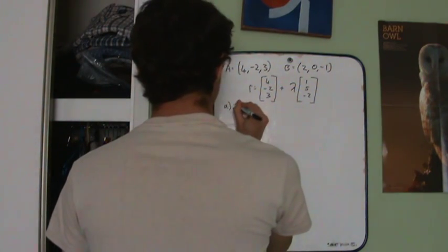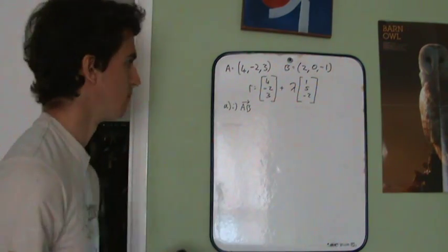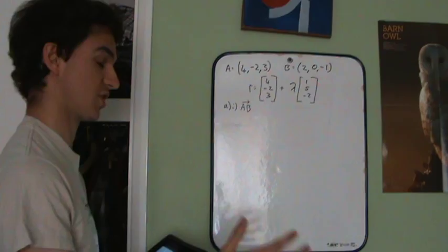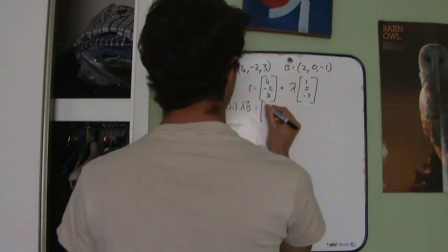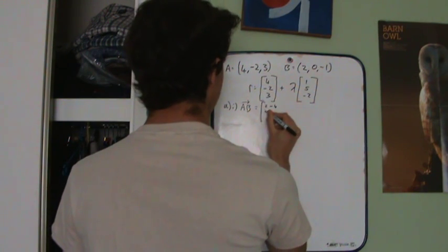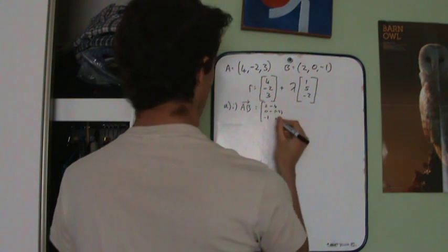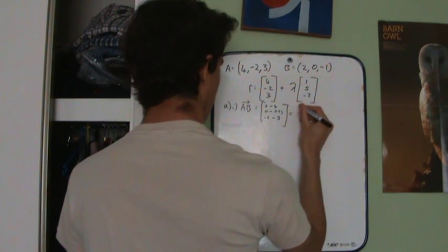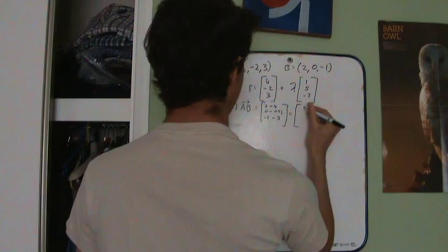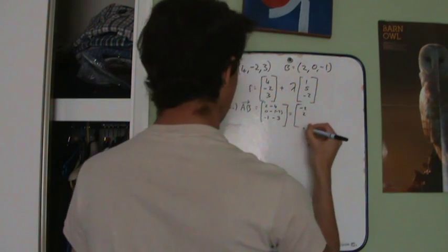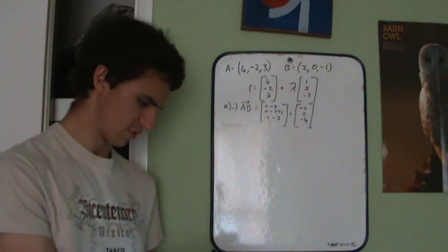It tells us to find the vector AB, and we know that the vector AB is just B minus A, or more correctly OB minus OA, where O is the origin. So it's just going to be (2 minus 4), (0 minus minus 2), and (minus 1 minus 3), which gives you minus 2, 2, minus 4. That was 2 marks.